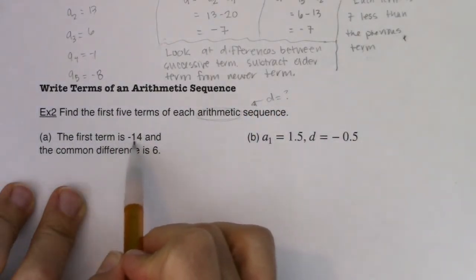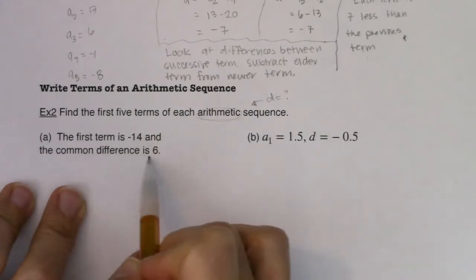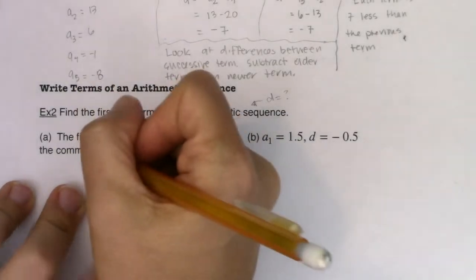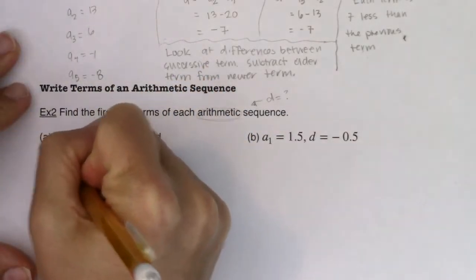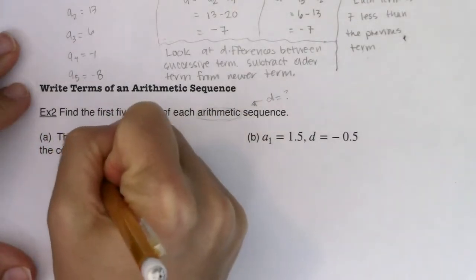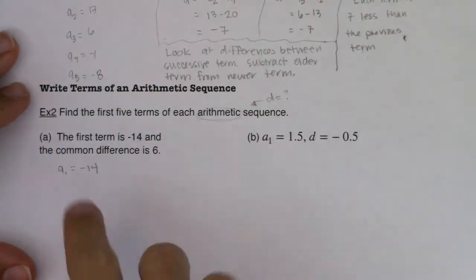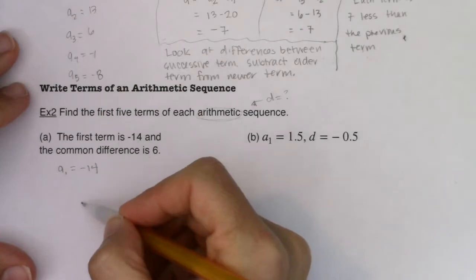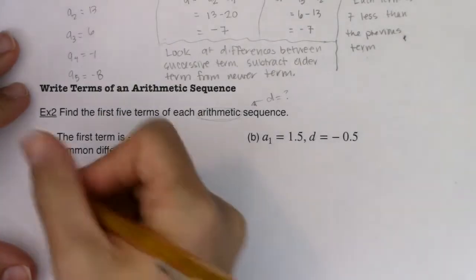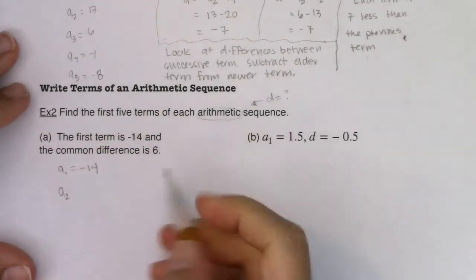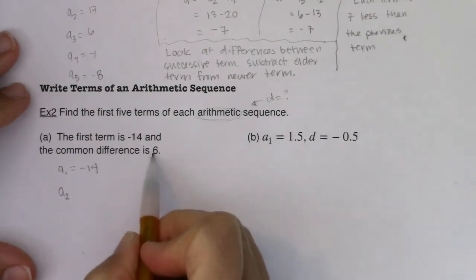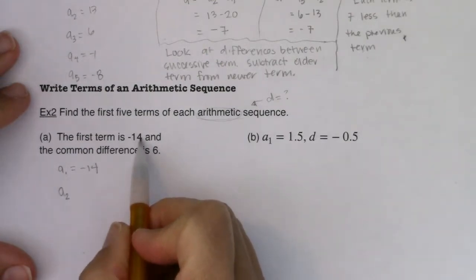So let's take a look. It says here, the first term is negative 14, and the common difference is six. So if I'm looking at this, I know A sub one is negative 14. They started me with negative 14. I need to find A sub two, three, four, five, and six. Well, for A sub two, what I need to do is take this common difference and add it to my starting value.